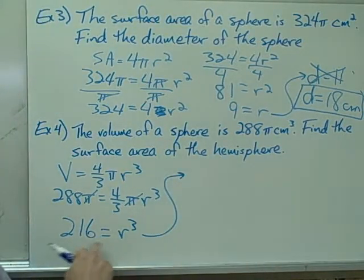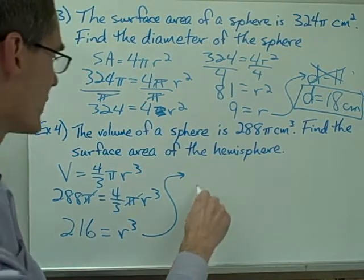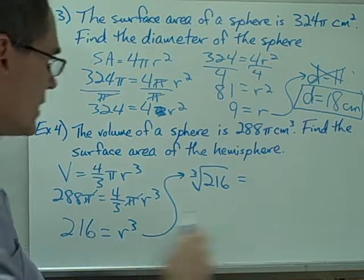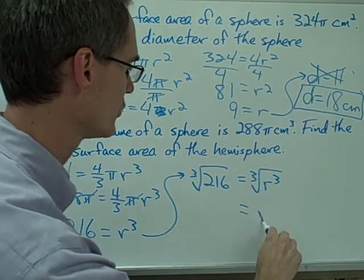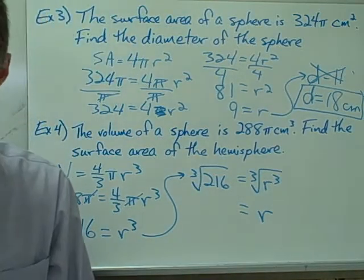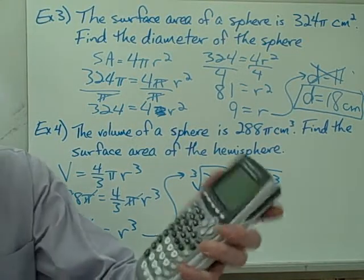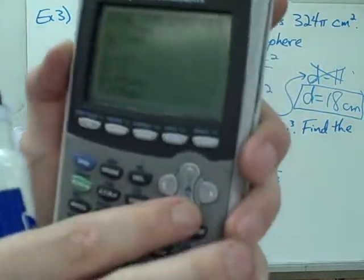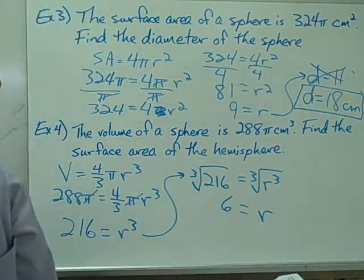Since 216 equals r cubed, I'm going to take the cube root of both sides — just like if it were r squared I'd take the square root. The cube root of r cubed is r. Using a calculator — on a TI-84, the cube root is the fourth option in the math menu — the cube root of 216 gives me a radius equal to 6.